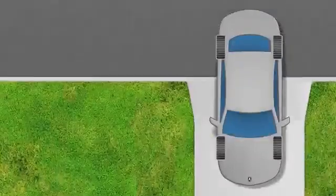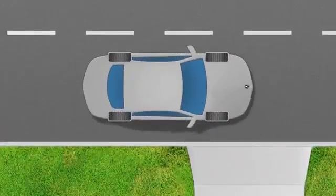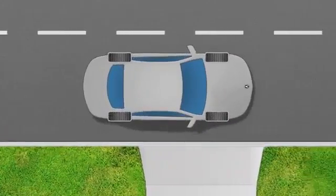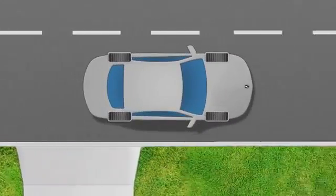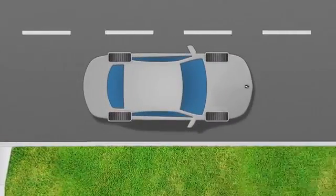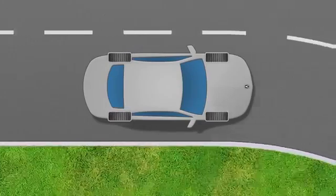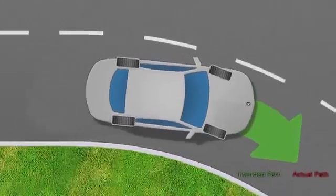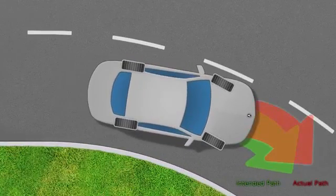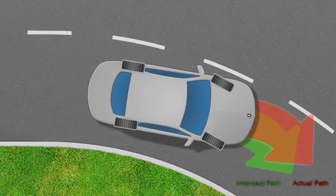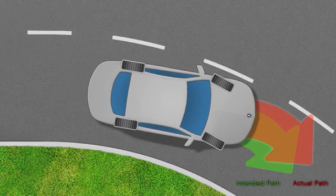Agile Handling Assist helps vehicles more accurately track the driver's intended path through a corner. When steering into a corner at speed, the front wheels may not follow along the exact path intended by the driver, allowing the front of the vehicle to push towards the outside of the curve. This is called understeer.